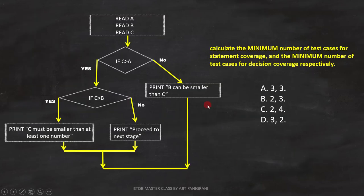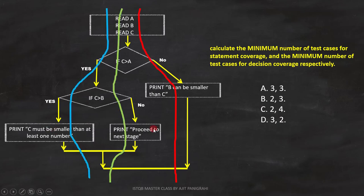Now let's use this flowchart to get the answer. Here, we have to find minimum number of test cases for statement and decision coverage. Let's first find the test cases for statement coverage. We can see these three statements are on three different branches. That means we need three test cases for statement coverage.